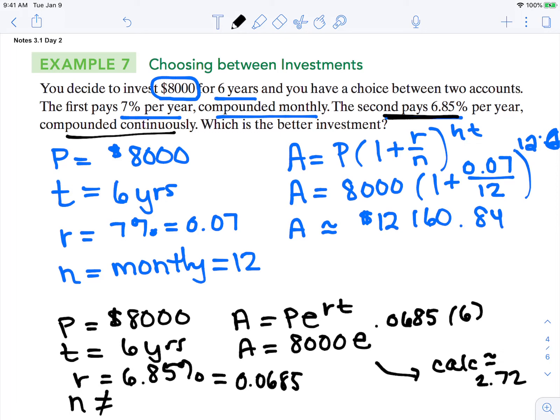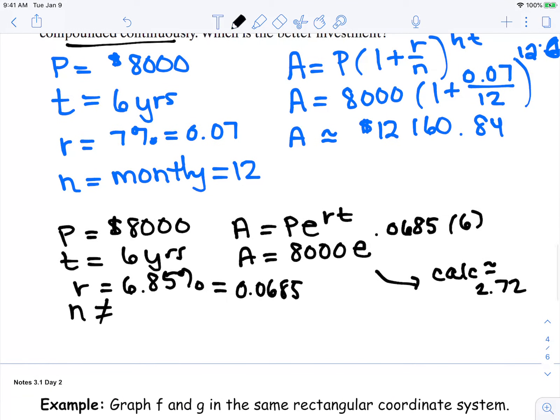Type in 8,000. You're going to go second, Ln, which is your E to the X button. Then type in your decimal place of 0.0685 times 6 and then enter. And that amount is approximately $12,066.60.